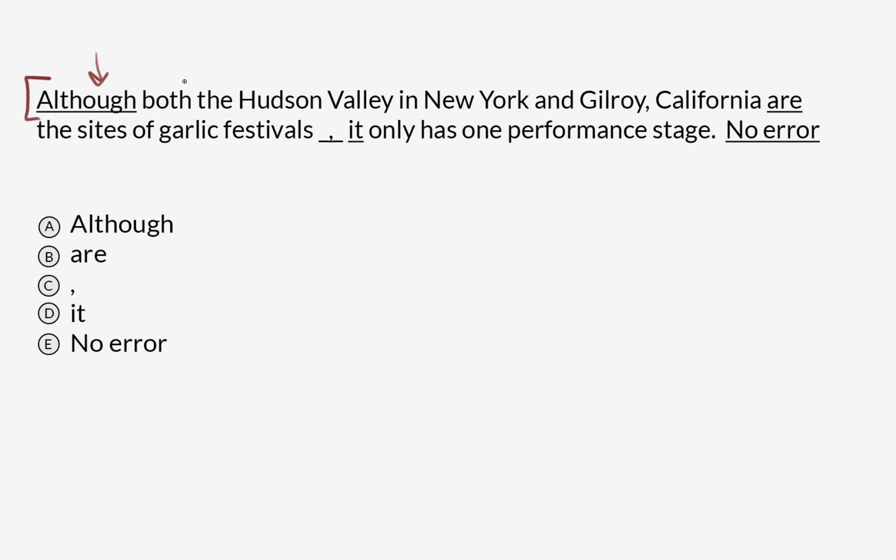Where does the dependent clause begin? Here's our subject: Hudson Valley, Gilroy, California are the sites of garlic festivals. And then we've got a comma that ends the dependent clause.